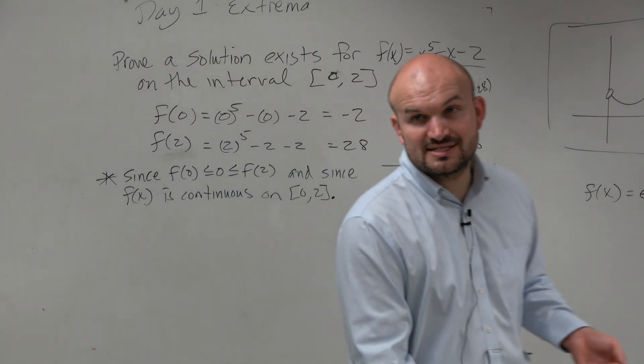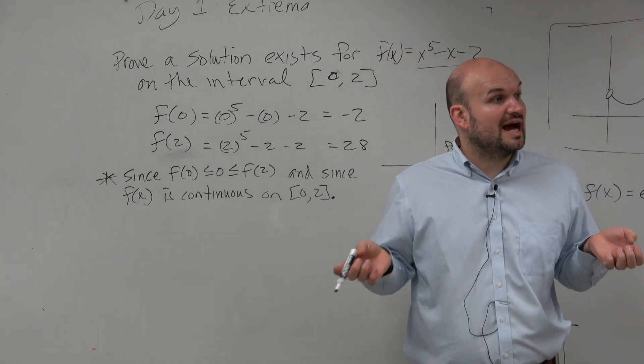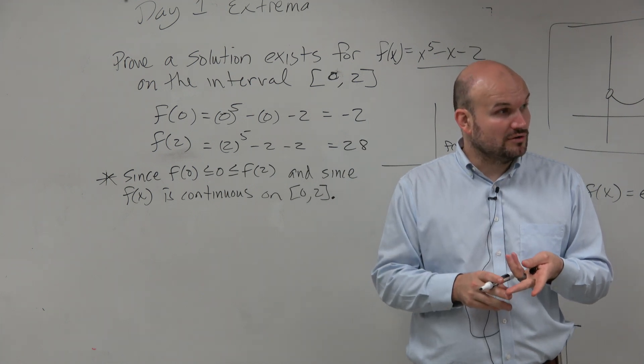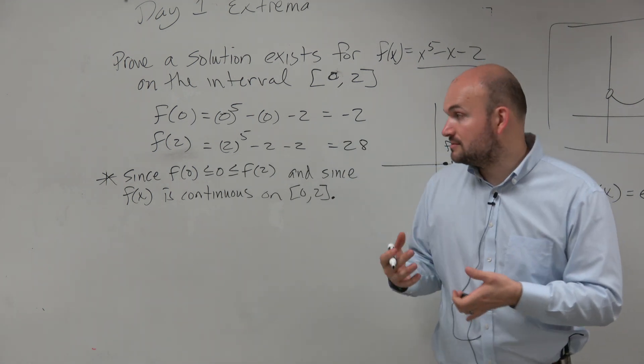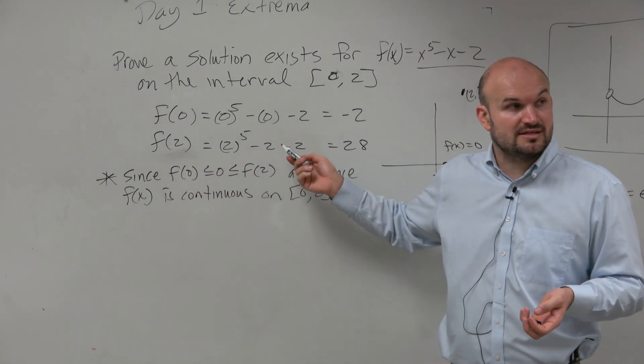So do you guys agree how we've kind of set everything up? We've got everything necessary that we need for the IVT. We have continuity. We have a closed interval, but we've also shown that there's a value that's lower than 0 and a value that's above 0.